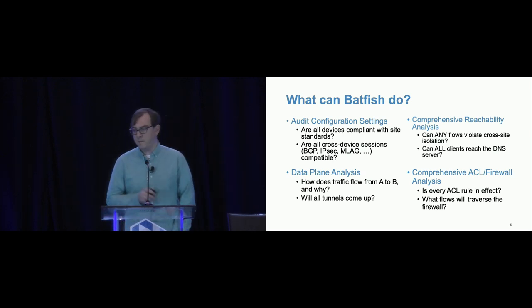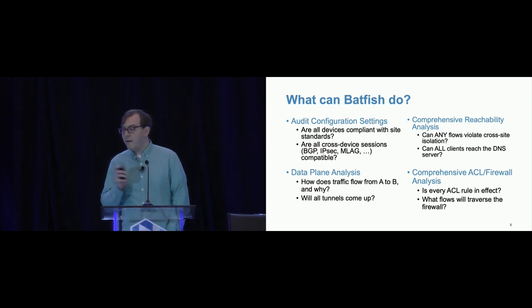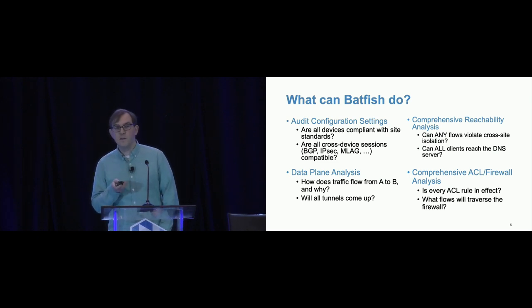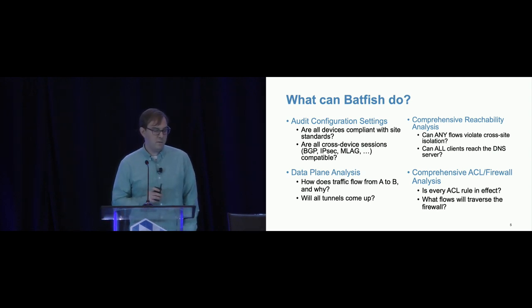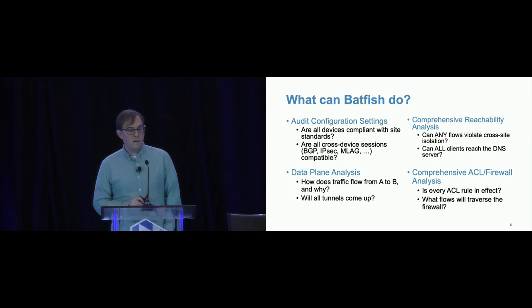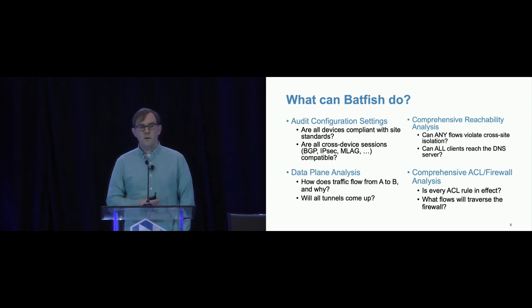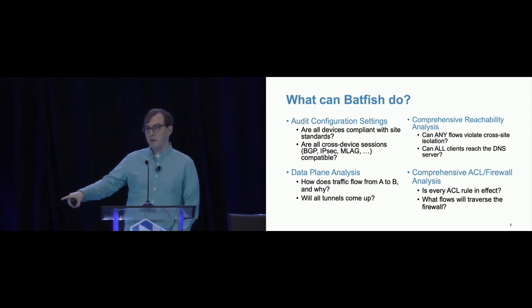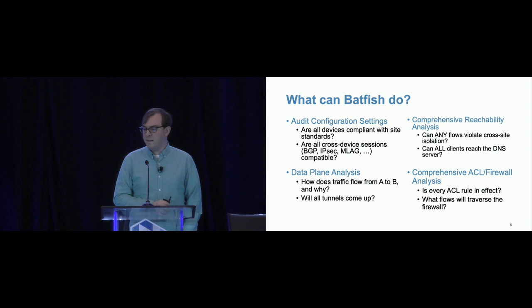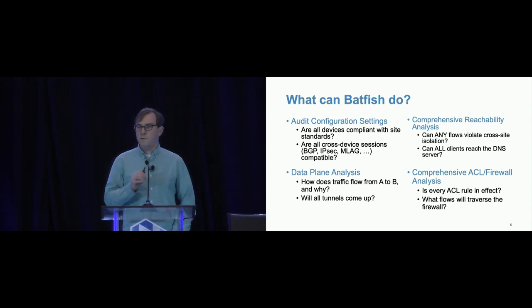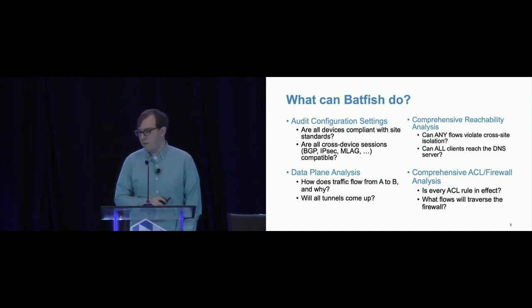Batfish can also do comprehensive reachability checks. For example, our comprehensive reachability analysis can answer questions like: can any flows violate cross-site isolation — not just the flows I'm looking for, but is there any possible packet that will do this? Or ensure that all clients can reach my DNS server. We can also do comprehensive analysis over ACLs and firewall rules — for example, given an ACL definition, does every rule actually matter, or did I mess up the order so some rules are totally unused? You can tell Batfish to find every single flow that can get from outside to inside the network.